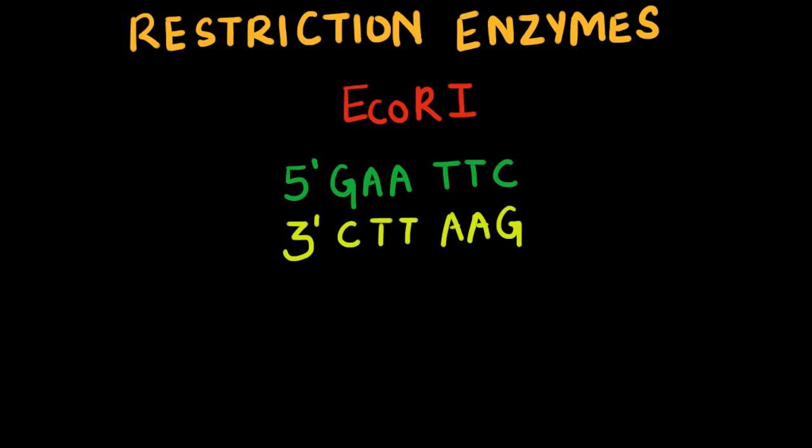Another example of a restriction enzyme is EcoRI. EcoRI specifically recognizes the nucleotide sequence GAATTC and its complementary sequence CTTAAG. When this enzyme comes in contact with the sequence of DNA, it specifically cuts between the G and A of the 5' strand right here as well as the A and G of the 3' strand right here, resulting in two nucleotide fragments as seen here.